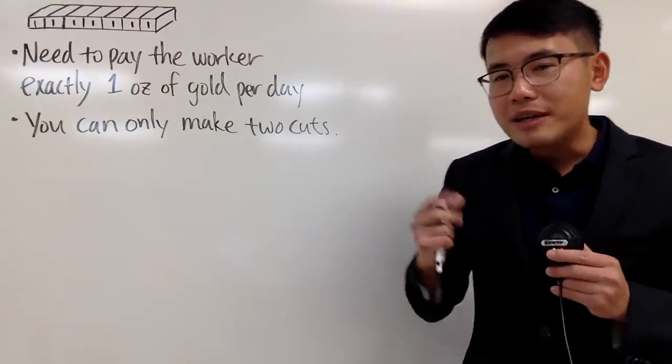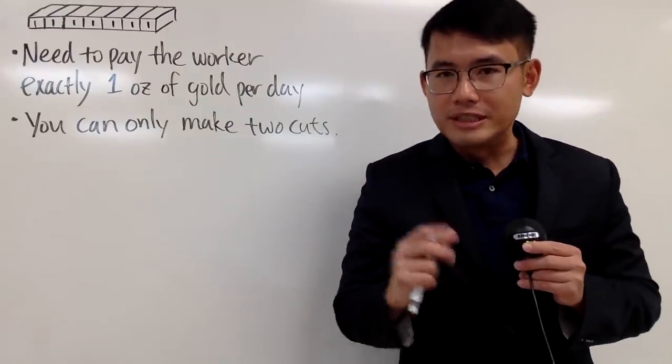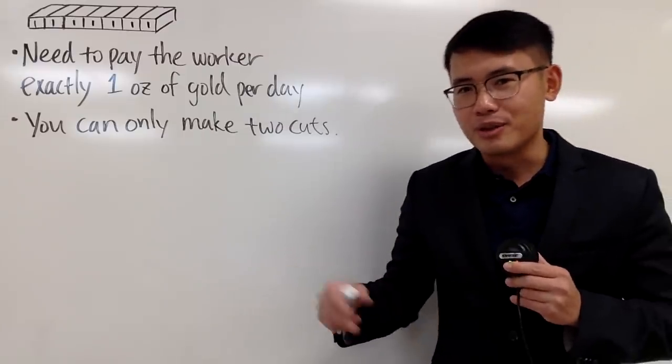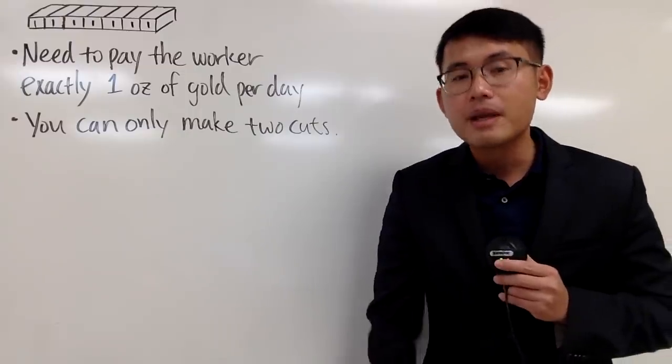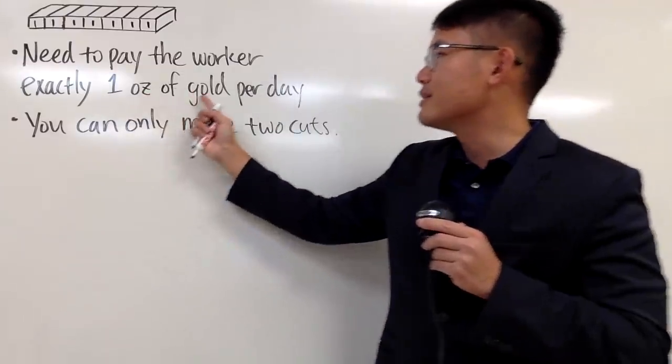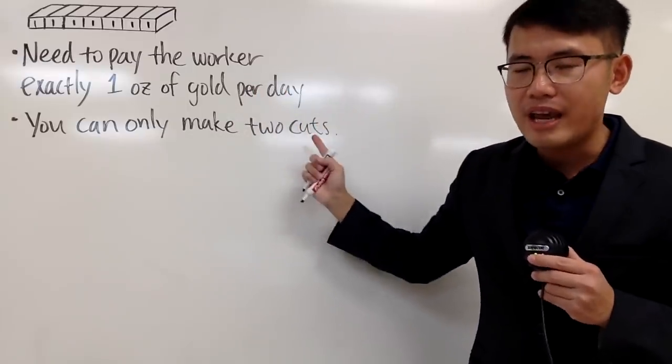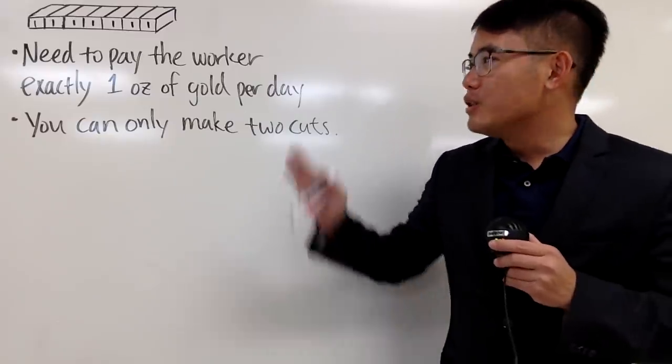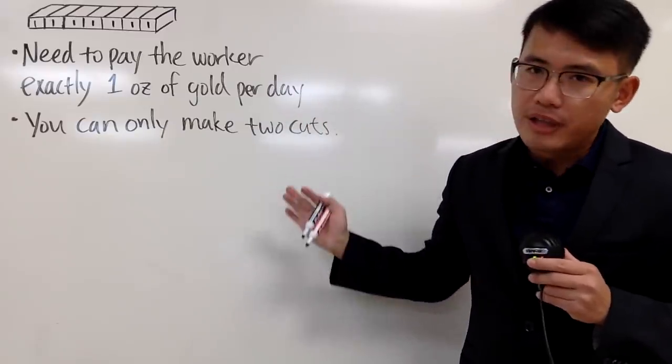Anyway, you are going to hire somebody to do some work for you for 7 days, maybe to do your website or whatever. And you have to follow the scenario, so for the sake of the question. You are going to pay the worker exactly 1 oz of gold per day. You are not going to give him the whole thing the first day, because otherwise he will run away. Just 1 oz of gold per day.